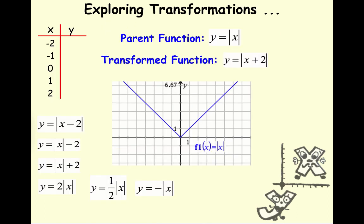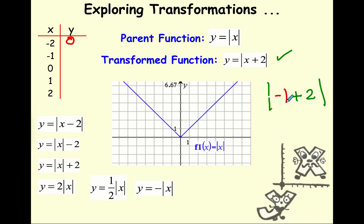Now let's see what happens when we do things to the parent function — this is called a transformed function. I'm going to make a table of values. For this one, I'm taking the absolute value of x plus 2. If I put in negative 2: negative 2 plus 2 is 0, absolute value is 0. For negative 1 I get absolute value of positive 1, which is 1. With 0 I get the absolute value of 2, with 1 I get the absolute value of 3, and with 2 I get the absolute value of 4.